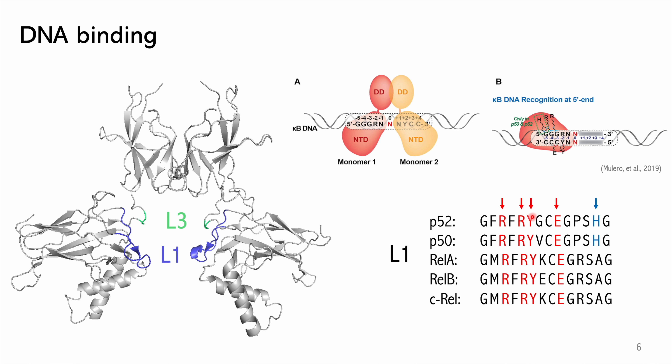P50 and P52 also have a conserved histidine which recognizes the G at the end. So the consensus sequence of these proteins is longer by one base pair.